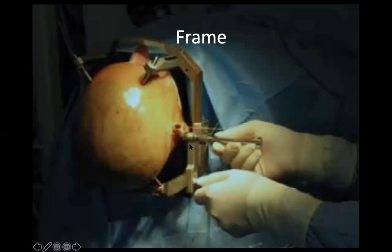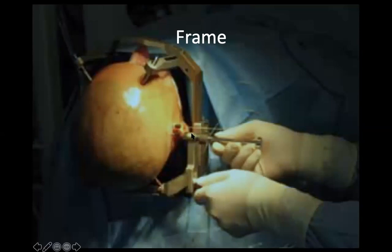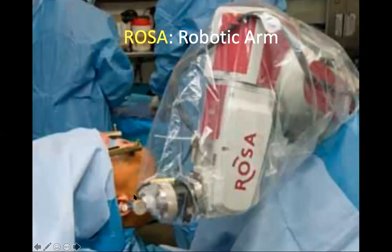In the old days people used a stereotactic frame — which is still what we currently use in Malaysia — to provide coordinates on where to insert electrodes and at what direction. In Cleveland they use a robotic arm instead: no frame is needed, it is much faster and easier, and believed to be more accurate. Not every country has a ROSA robot; my colleague in Sydney told me they still use a frame.